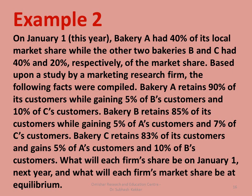A second example: on January 1 this year, Bakery A had 40% of its local market share, while Bakeries B and C had 40% and 20% respectively. Based on a marketing research study: Bakery A retains 90% of its customers, gains 5% of B's and 10% of C's customers. Bakery B retains 85% of its customers, gaining 5% of A's and 7% of C's. Bakery C retains 83% of its customers, gaining 5% of A's and 10% of B's. What will each firm's share be on January 1 next year, and what will each firm's market share be at equilibrium?